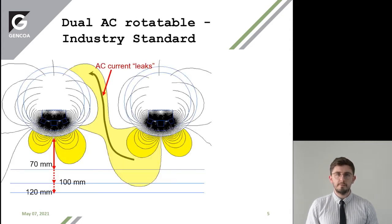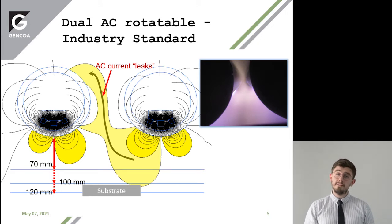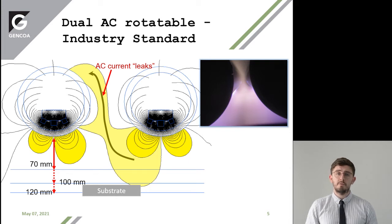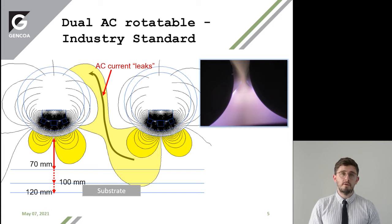Here's the schematic of the industry standard for rotatable magnetron sputtering using an AC system. You can see two targets here. These lines indicate the magnetic field, and I've indicated the position of the substrate about 100 millimetres away from your target. This region in yellow is an issue with this particular setup — this is leak currents.